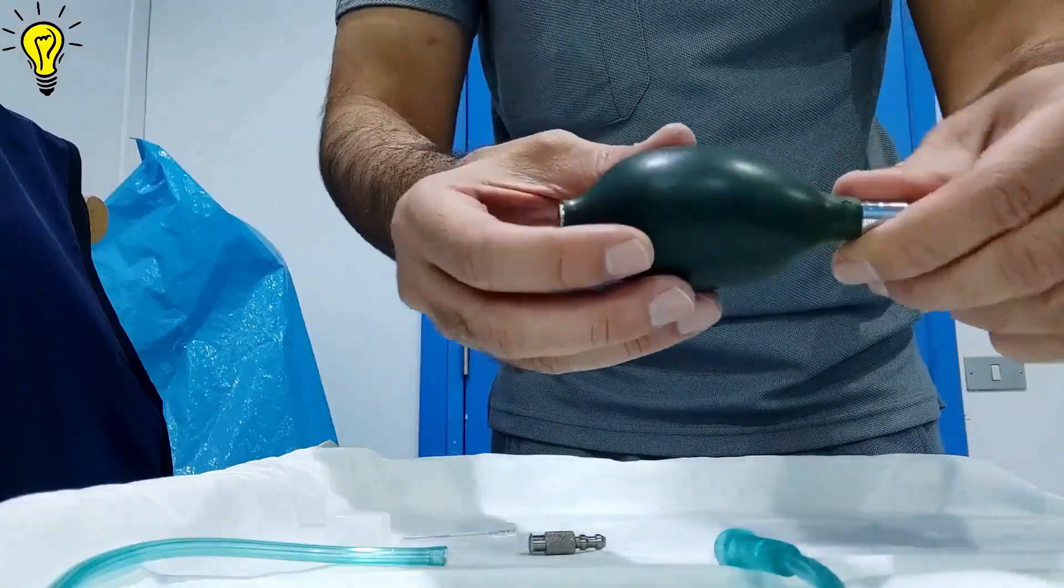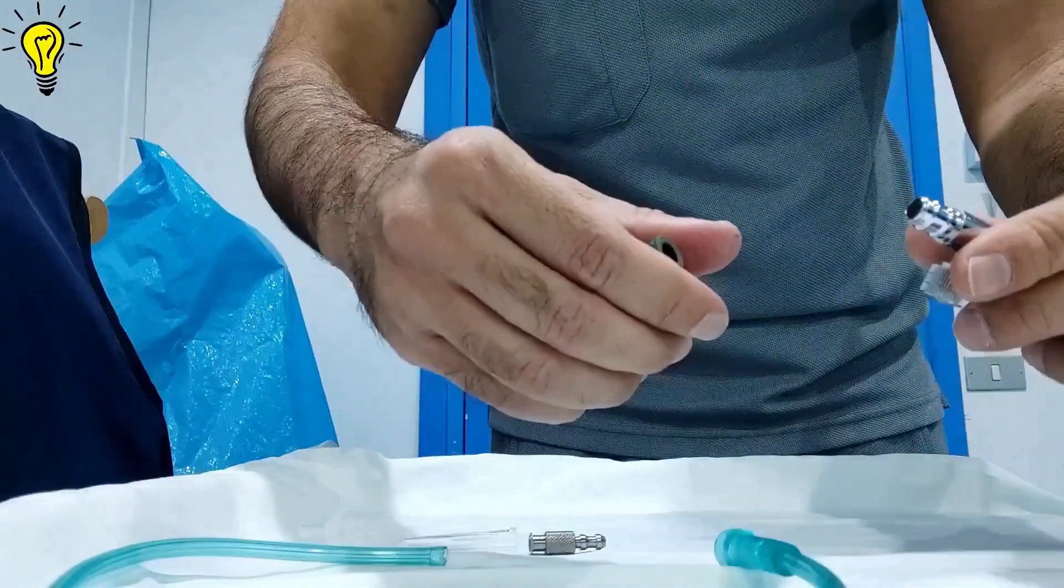Firstly, disconnect the cuff from BP apparatus and remove the blocker from outer side.